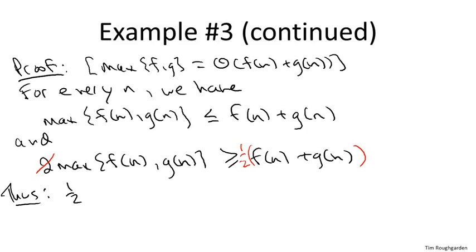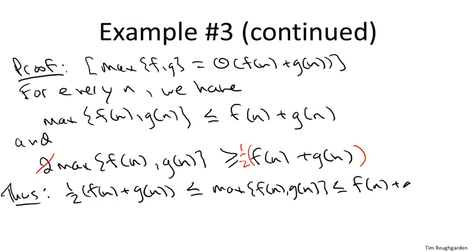Right? So what does this say? This says that for every possible n the maximum is wedged between suitable multiples of the sum. So one half f of n plus g of n is a lower bound on the maximum. This is just the second inequality that we derived. And by the first inequality that's bounded above by once times the sum. And this holds no matter what n is. Any n at least one.